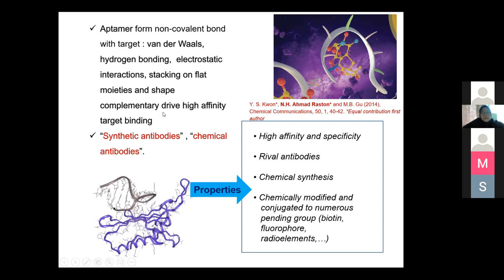Most of you are familiar with antibodies in developing biosensors. Aptamers have also been known as synthetic antibodies or chemical antibodies because they can be produced chemically. That's why they are called chemical antibodies. Aptamers possess high affinity and specificity to their targets, rivaling antibodies. They can be produced just by chemical synthesis and, being only oligonucleotides, can be easily chemically modified and conjugated to numerous functional groups or nanomaterials for sensor development.